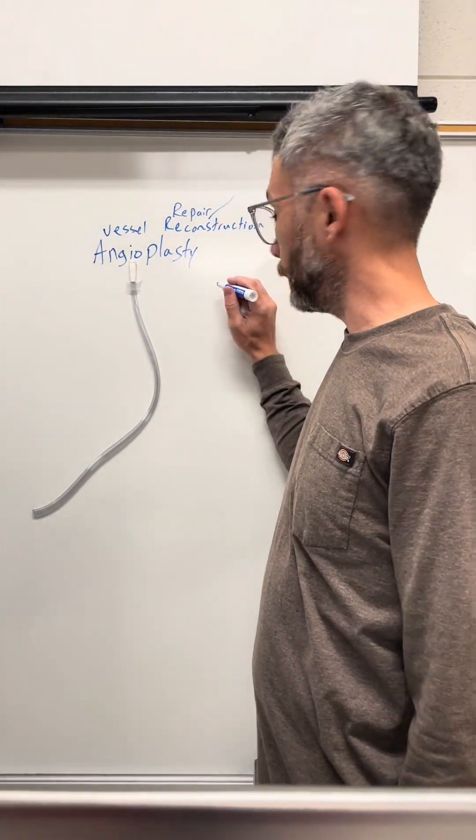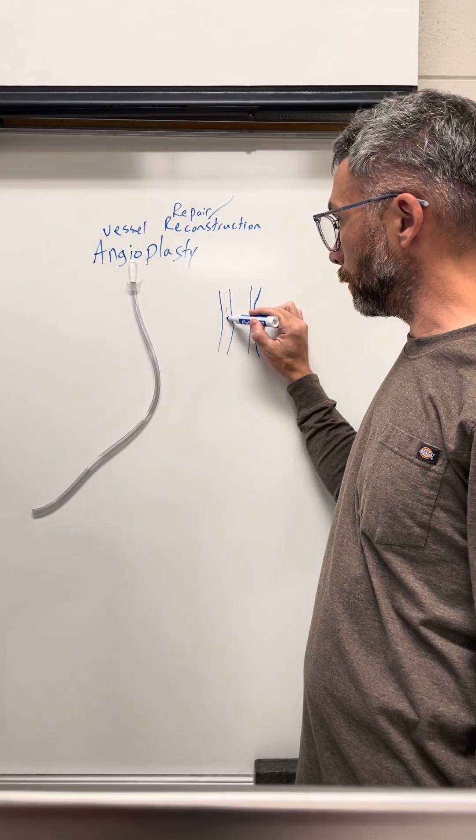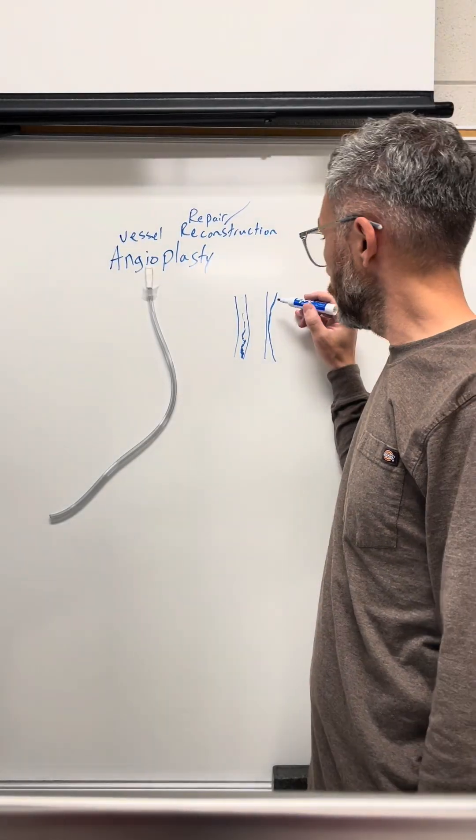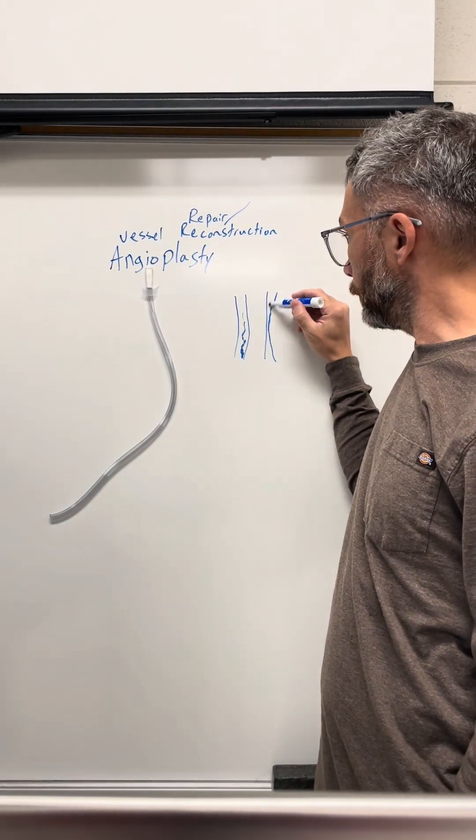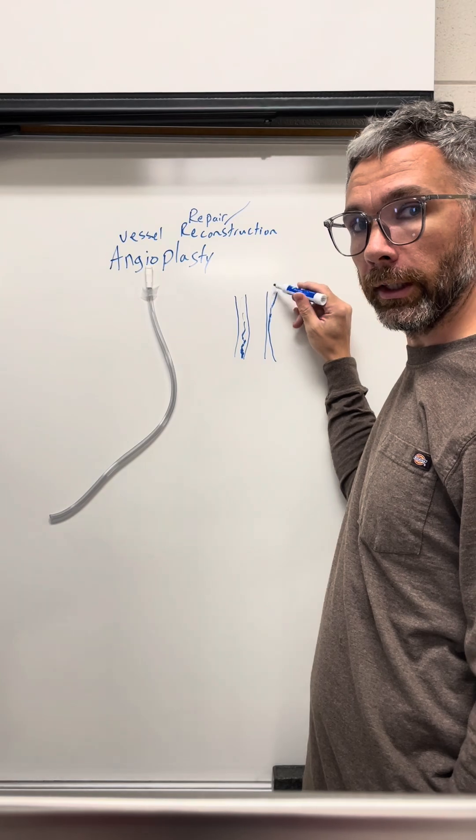Usually you want your vessels to be pretty uniform. You want a vessel to be able to flow. You don't want it to have a stricture or get smaller. Then when stuff starts backing up here, pressure behind it gets bigger.